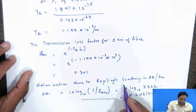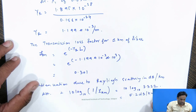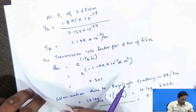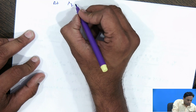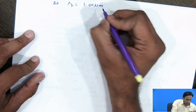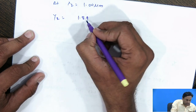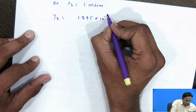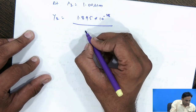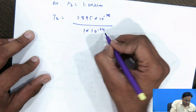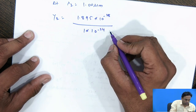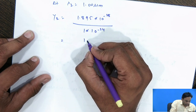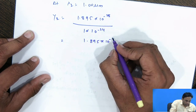For 0.63 micrometer, the attenuation due to Rayleigh scattering is 5.2 dB per kilometer. In the similar fashion, we solve for lambda 2 at 1.0 micrometer. The Rayleigh scattering coefficient is 1.895 × 10⁻²⁸ divided by (1.0 × 10⁻⁶)⁴ = 1.895 × 10⁻²⁸ / 10⁻²⁴ = 1.895 × 10⁻⁴ per meter.